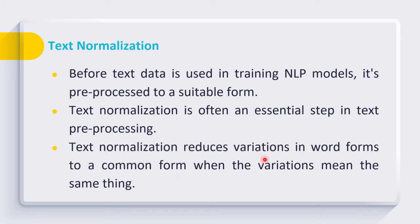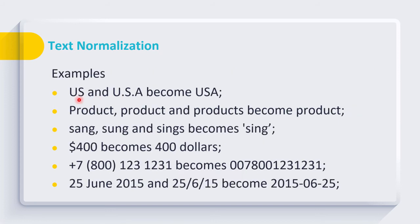Text normalization reduces the variations in the word forms to a common form, when the variations mean the same thing. Sometimes the same text can be written in multiple ways. For a computer, it represents different meanings, but from a knowledge point of view, it represents the same thing. For example, US and USA represent two different things for a computer, but for knowledge extraction purposes, they represent the same information. So during text normalization, we actually normalize these variations to a uniform form.